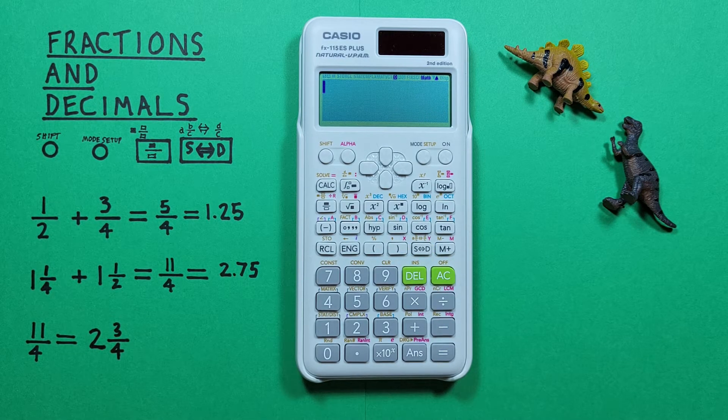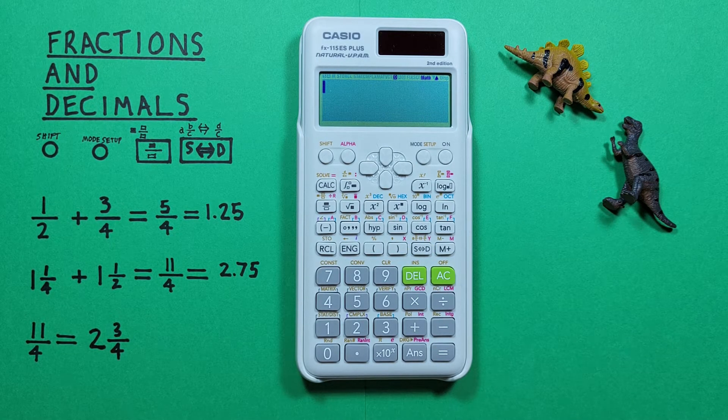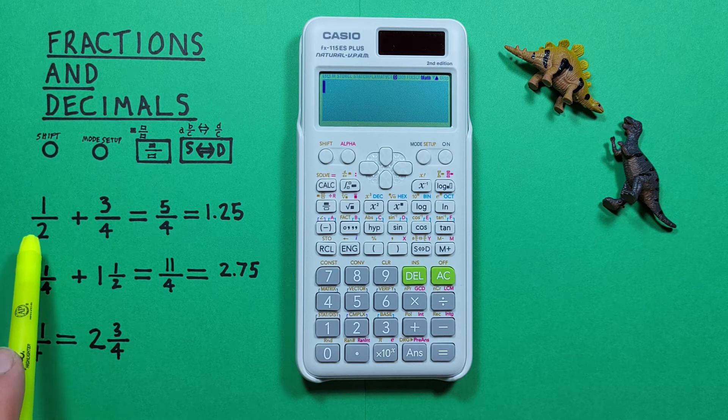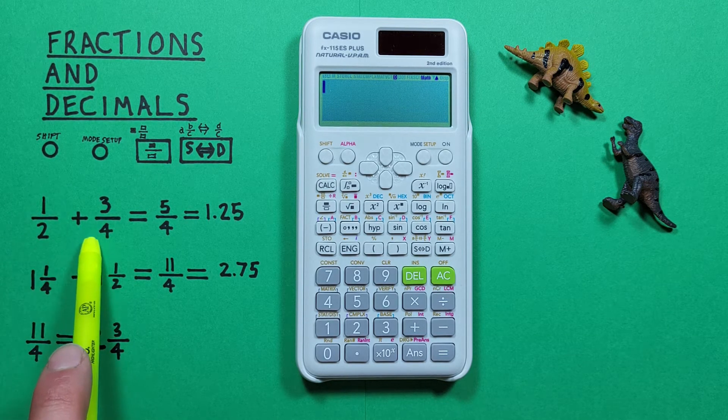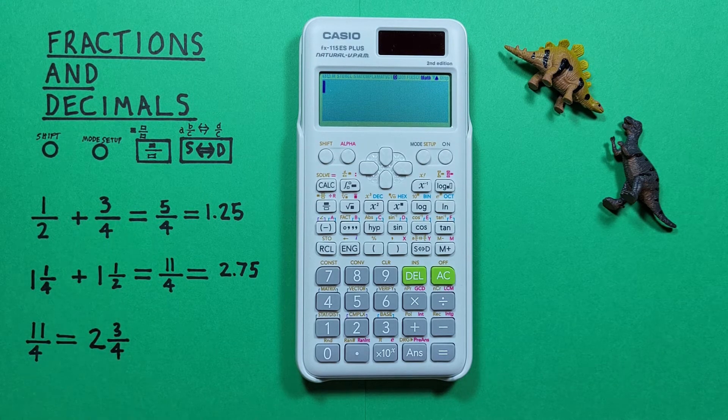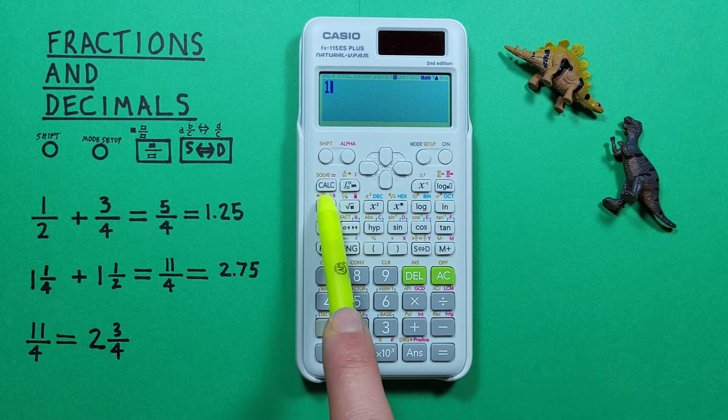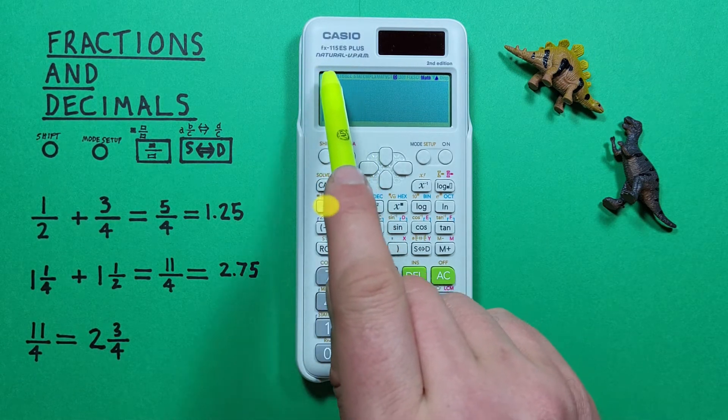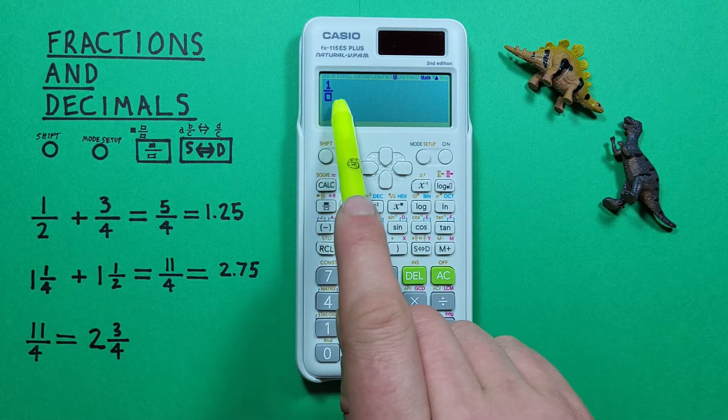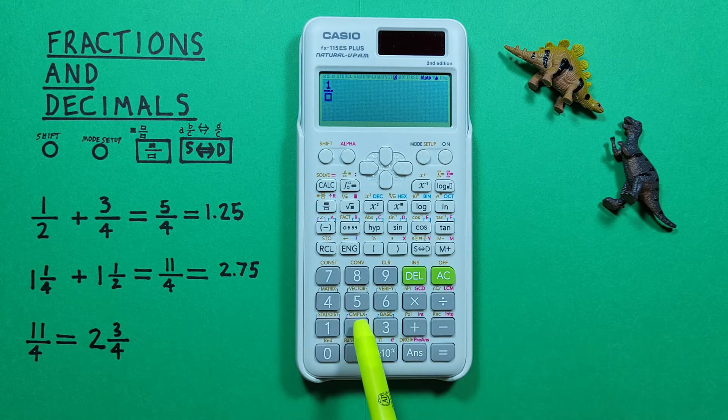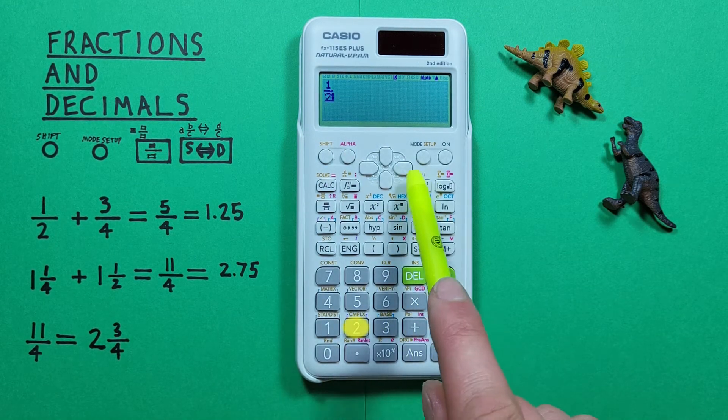We can also enter fractions and use them in calculations. For example, let's say we were given this: 1 over 2 plus 3 over 4. To do this, we start with the 1 and then press the fraction key here. We see our 1 is now in the top position and we have a box underneath so we can put our 2 there. And then scroll to the right.